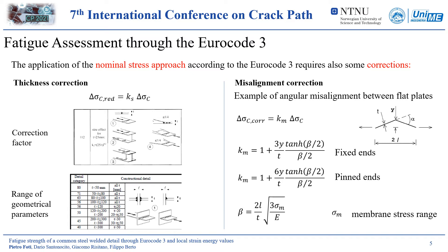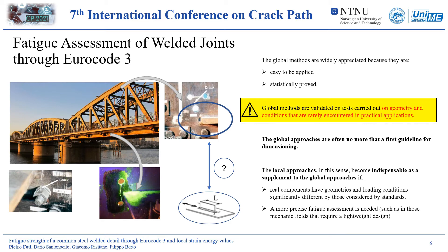In order to extend their applicability to components with geometry that deviates from the one enlisted, the standards introduce some correction factors such as the thickness correction or the misalignment correction. It is worth noting that also in these cases there is not a unique way to treat these aspects. As regards the thickness correction, for example, the standard proposes in some cases a correction factor to be assessed through an equation, and in other cases ranges of geometrical parameters. Anyway, the method discussed above is widely appreciated because of its simplicity and statistical proof, but it is important to notice that its validation is based on geometry and loading conditions rarely found in real applications, which lacks in this way an actual statistical proof.